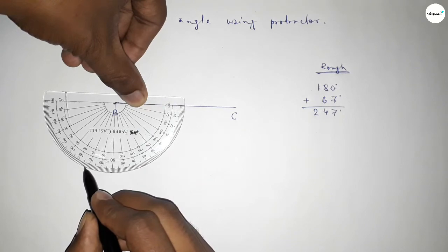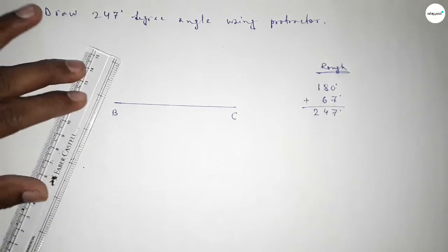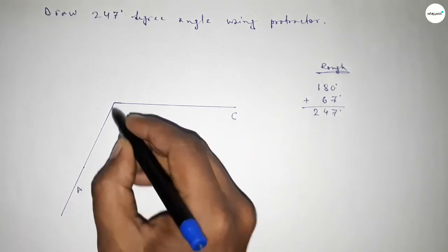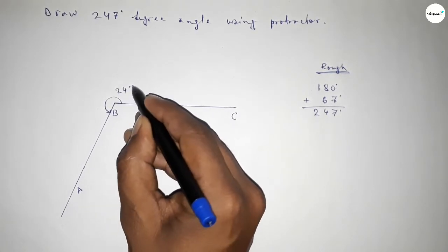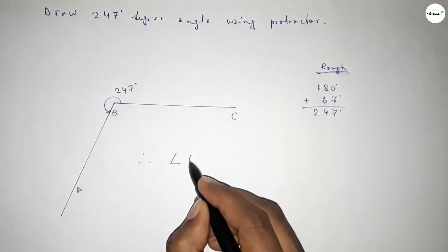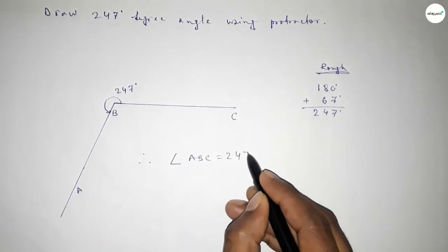So now joining this to get 247 degree angle, so taking here a point. So angle ABC up to this is 247 degree angle. Therefore angle ABC equal to 247 degree angle.